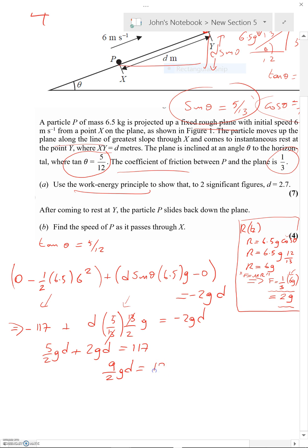Okay, that's going to give me 9 over 2 gd is equal to 117. So d is equal to 26 over g, which gives us 2.7 to two significant figures as required. Okay, so that's the first bit done.